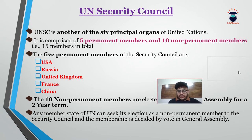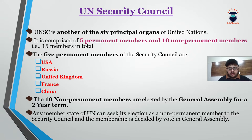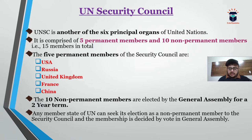The United Nations Security Council is also one of the six principal organs of the United Nations. It has 15 members: five permanent and ten non-permanent. The five permanent members are the USA, Russia, United Kingdom, France, and China. They always hold a seat in the United Nations Security Council.